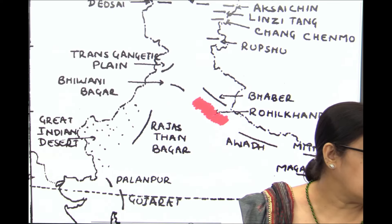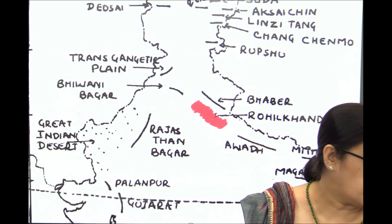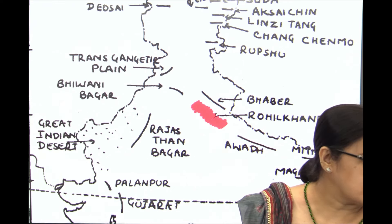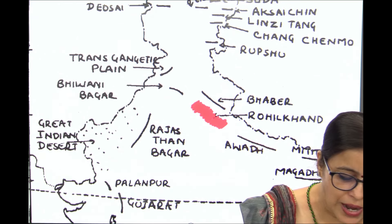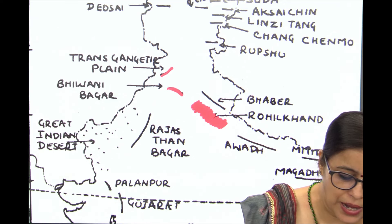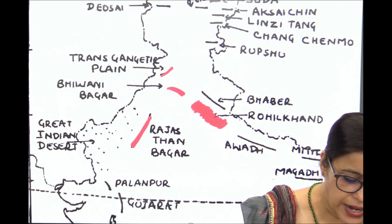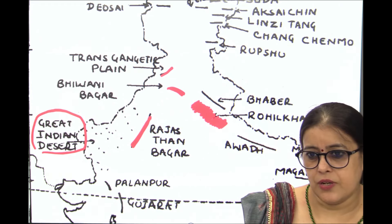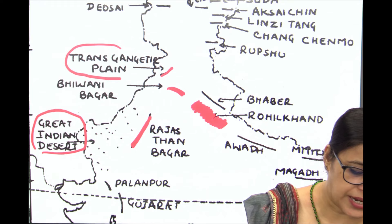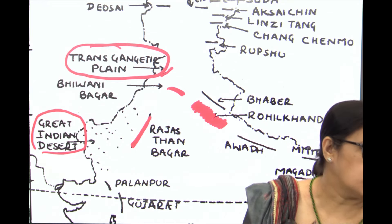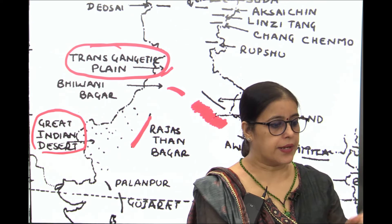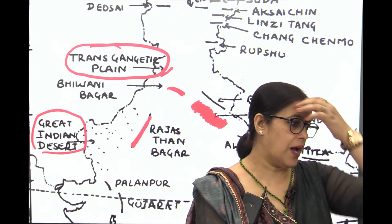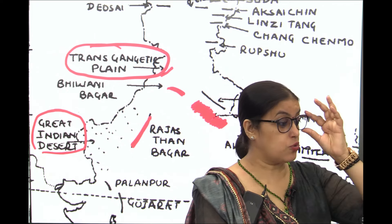We begin with the western, that is trans-Gangetic plain — be there on the map of India. Maximum names are given there. Wherever required, I will ask you to go to the regional map. I have marked trans-Gangetic plain, and then Bhivani-Bhagar, Rajasthan-Bhagar, and Great Indian Desert. Remind yourself that for trans-Gangetic plain, get on to your regional map. If Bhivani-Bhagar, Rajasthan-Bhagar, and Great Indian Desert are already marked, trans-Gangetic plain here is to denote.